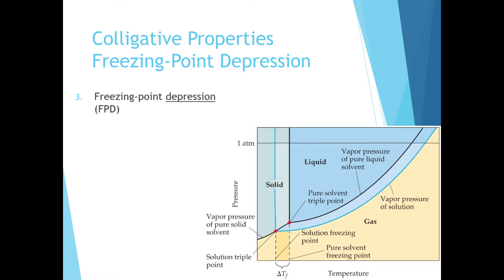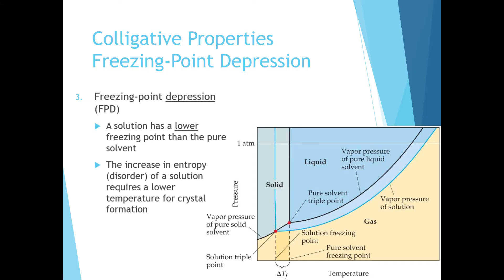We can also look at how the freezing point of a solution is lower than the freezing point of the pure solvent. This is a result of the increasing entropy or disorder of the solution due to the presence of solute particles. Because of this increase in disorder, the particles must slow down to an even lower temperature for crystals to form and a liquid to become a solid. We can see this in our phase diagram where the solution has an even lower freezing point. We compare the freezing point of our solution to our pure solvent with delta T of freezing point.